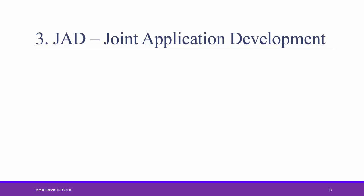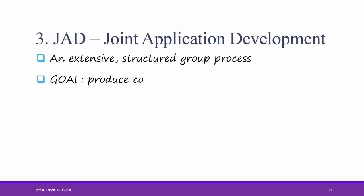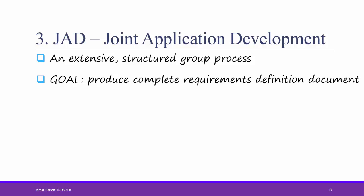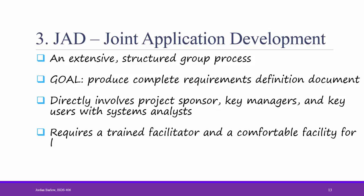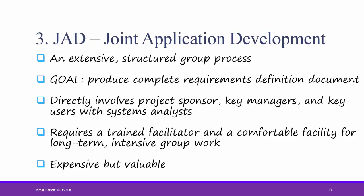The third technique for gathering systems requirements is JAD, Joint Application Development, also sometimes referred to as Joint Application Design. JAD is an extensive, structured group process. The goal is to complete a requirements definition document as a group, directly involving the project sponsor, key managers, and key users with the systems analyst. Ideally, a JAD session should have a trained facilitator and a comfortable facility for long-term, intensive group work. JAD is expensive but valuable. Typical group work issues include groupthink, people being hesitant to share opinions, or a lack of consensus.